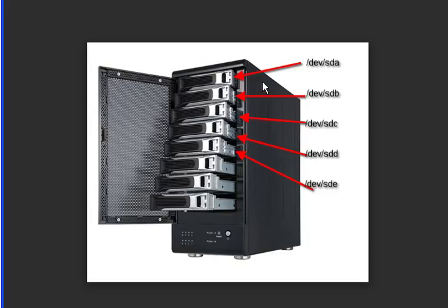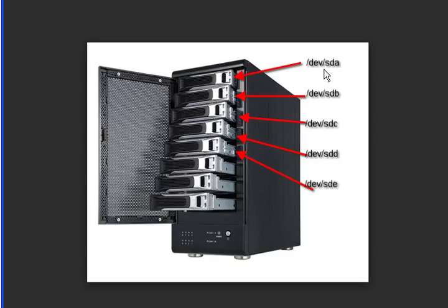When the OS finds your hard drives, one of the very important things it does is label them — meaning it gives them names. The first one it finds is called /dev/sda, the second /dev/sdb, and so on. You can think of these as Disk A, Disk B, Disk C, etc. In older systems, the naming was /dev/hda, /dev/hdb, meaning Hard Drive A, Hard Drive B. Labeling the drives is one of the very important things the OS does when it gets loaded into memory.